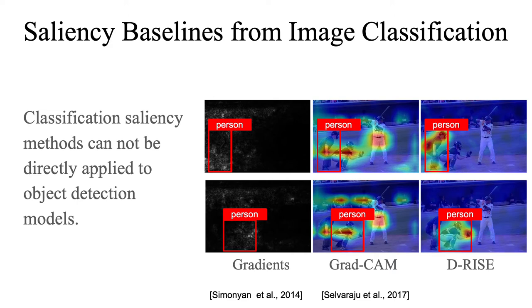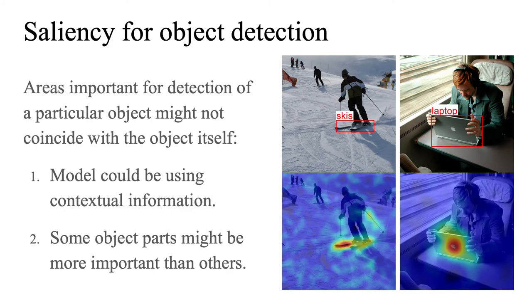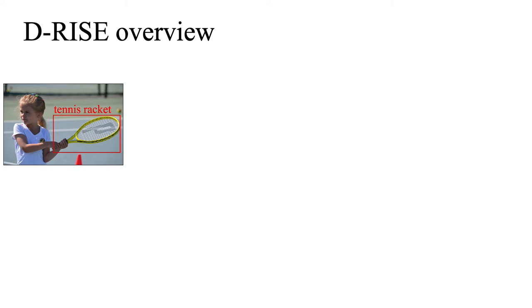D-Rise is our proposed approach. Even though the object detection task requires the model to localize the object within the image, localizing the areas of the image important for a particular detection is a separate task. These areas might not coincide with the object. For example, the model can use ski poles to detect skis. Take this detection of a tennis racket — how do different parts of the image contribute to this detection?